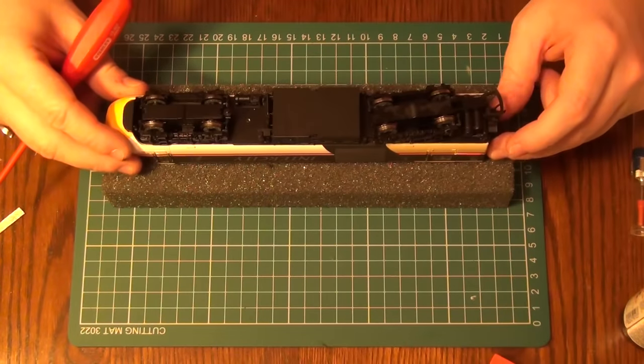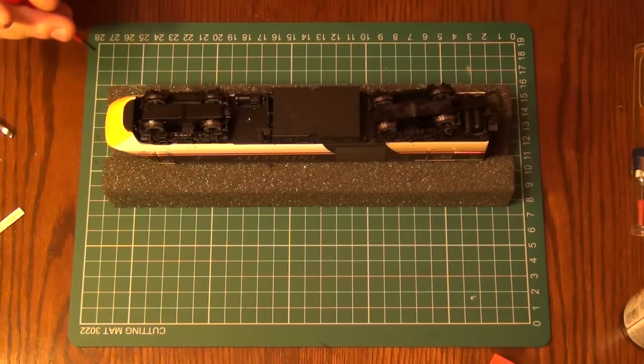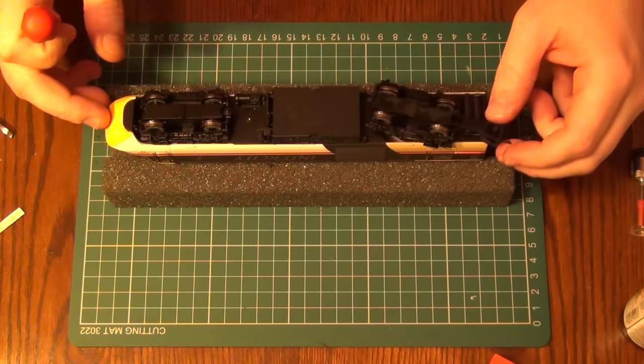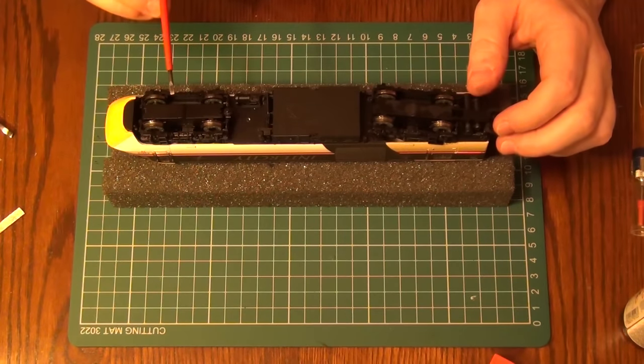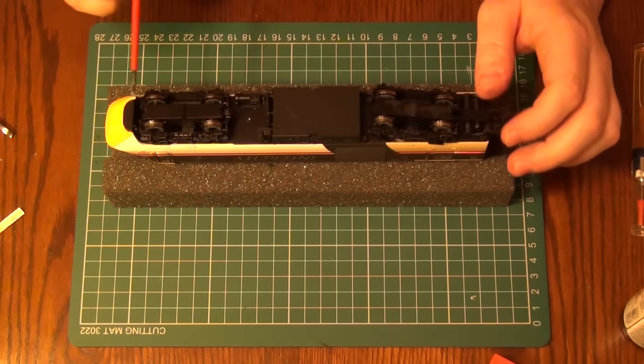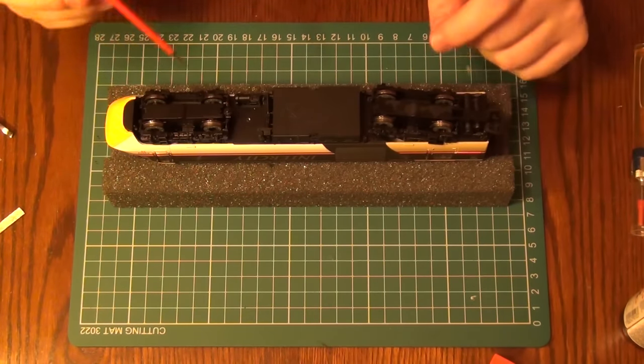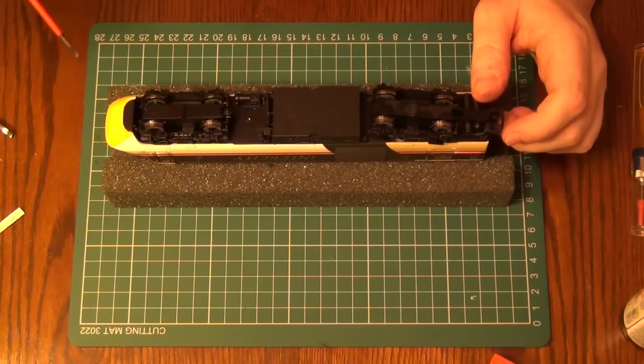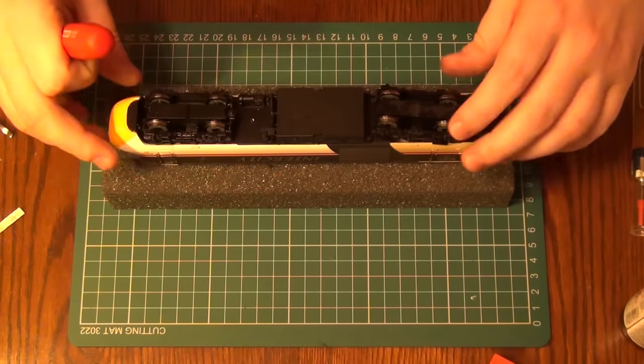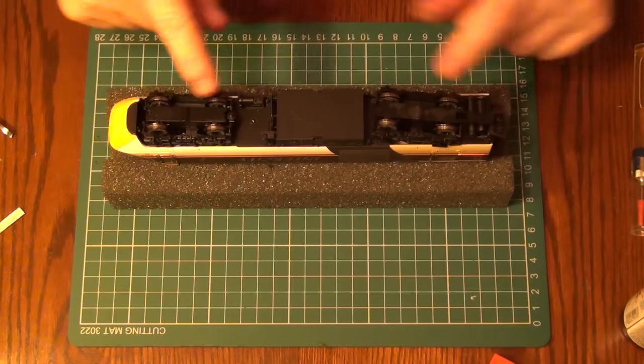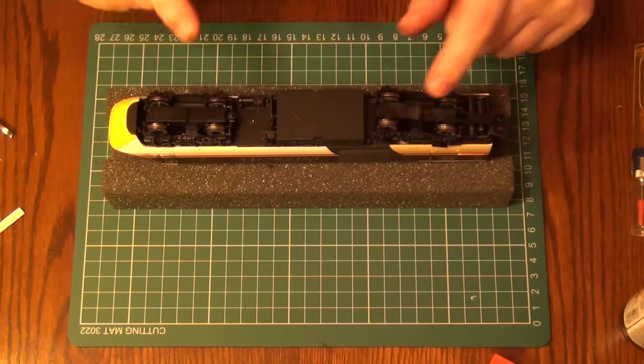We'll take a look at the powered unit first and have a look at how we can make sure she's in tip-top condition. The main consideration is the wheels but we do also need to make sure that she's lubricated throughout. Now this particular kind of model, the newer version of the HST, uses a flywheel mechanism inside to drive both bogies.